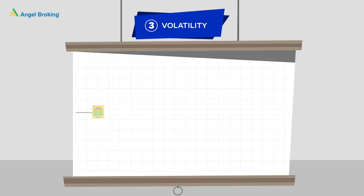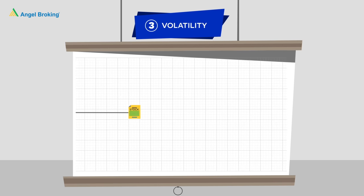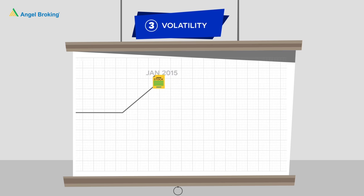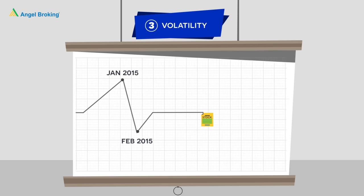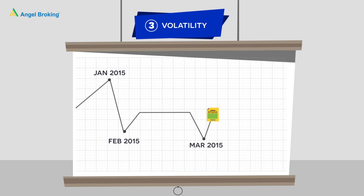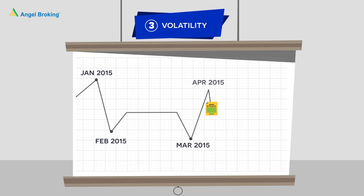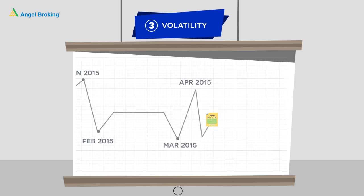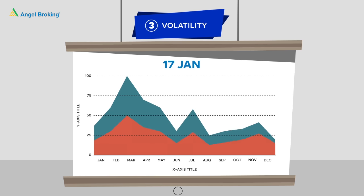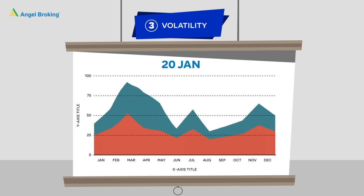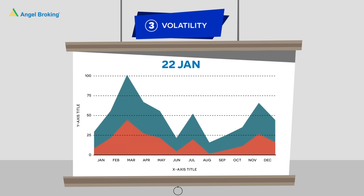3. Volatility. Volatility is the degree of variation of a trading price series over time, as measured by the standard deviation of returns. Simply put, the fluctuation of a stock, or the market in general, is referred to as volatility.